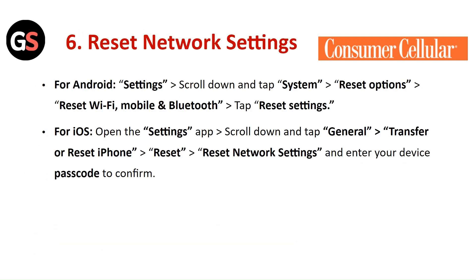Reset network settings. For Android, go to Settings, scroll down and tap on System, then Reset Options. Select Reset Wi-Fi, Mobile and Bluetooth, then tap on Reset Settings. For iOS, open the Settings app, scroll down and tap on General, then Transfer or Reset iPhone. Click on Reset and then Reset Network Settings. Enter your device passcode to confirm.